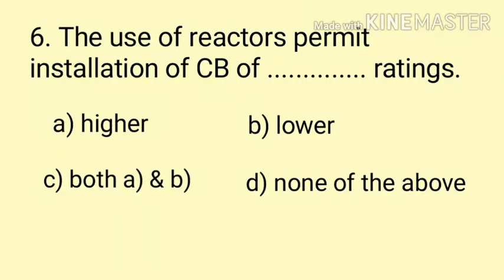Question number 6. The use of reactors permits installation of circuit breakers of dash rating. Dekho agar reactor permit hota hai circuit breaker ke installation mein, to obviously lower rating ka hoga, kyunki reactor oppose karta hai change in current ko aur usme bhi voltage drop hoga. Here the correct answer is Option B.